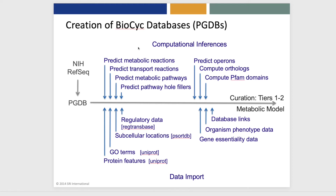The computational inferences we apply predict metabolic reactions and transport reactions of the organism. They predict metabolic pathways, as well as the genes that fill holes in those metabolic pathways. Our algorithms predict operons, compute orthologs, and compute PFAM domains.